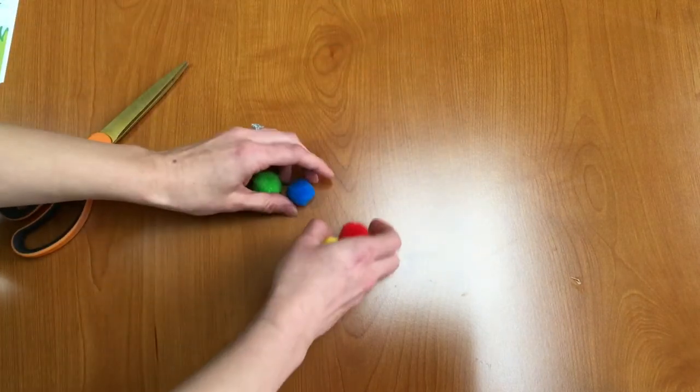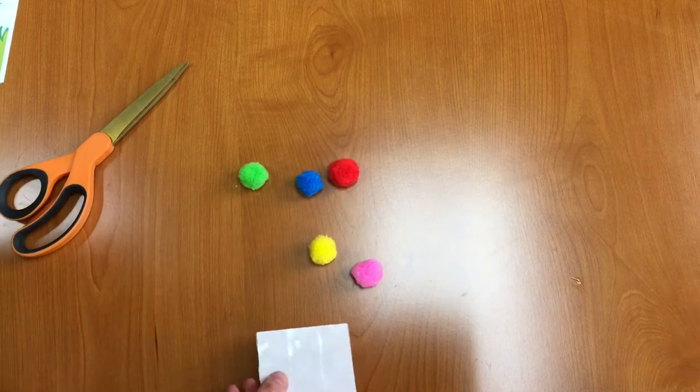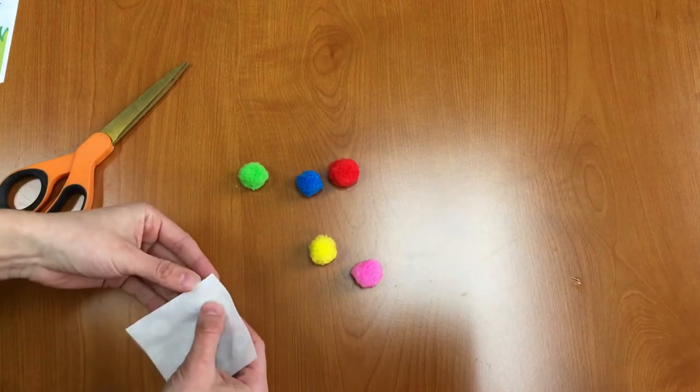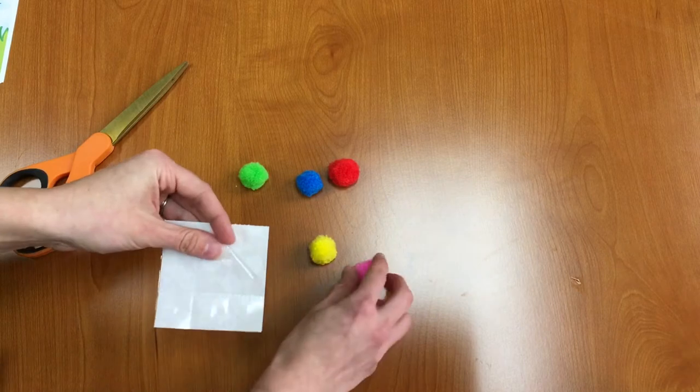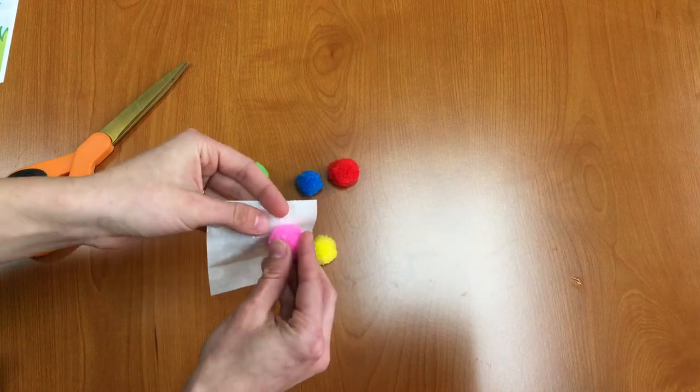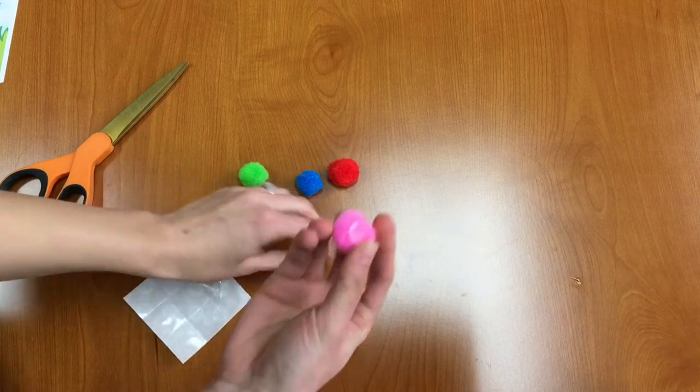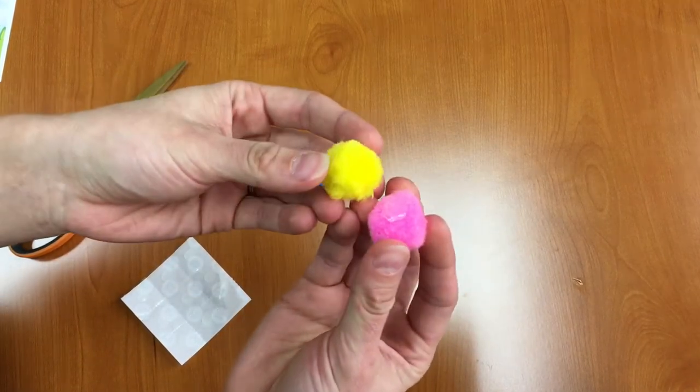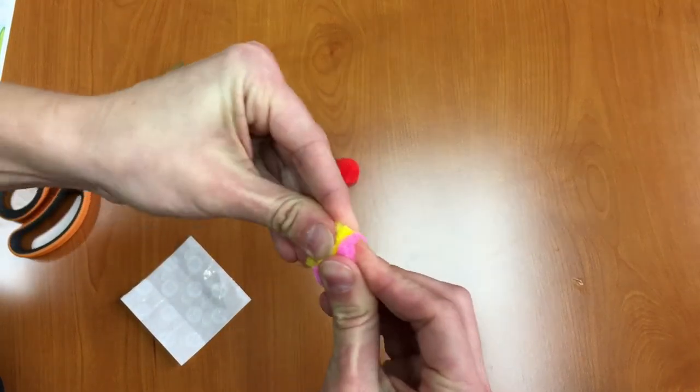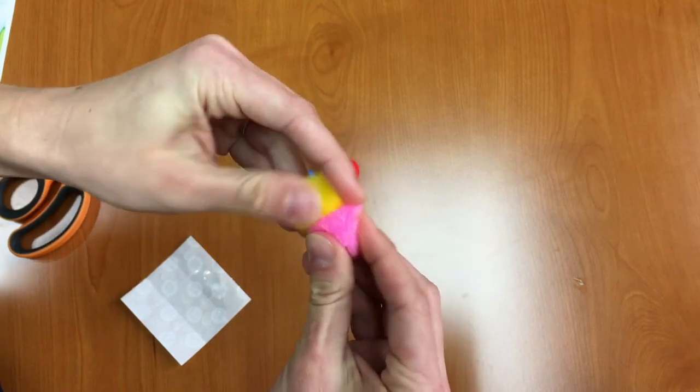All right we'll put our leaf aside for now and we're going to take our pom-poms and our glue dots and we're going to start to build our caterpillar. So the first thing you do is take one glue dot, attach it to a pom-pom, and then we're just going to stick these two together and push really hard to make sure that they stick. There we go.